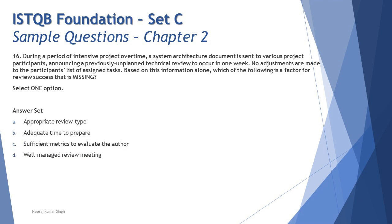Jumping into question number 16: During a period of intensive project overtime, a system architecture document is sent to various project participants announcing a previously unplanned technical review to occur in one week. No adjustments are made to the participants list or assigned tasks. Based on this information alone, which of the following is a factor for review success that is missing?